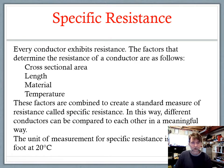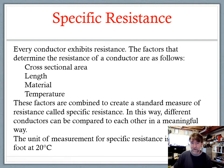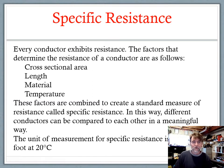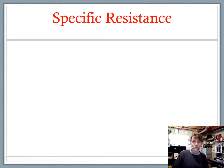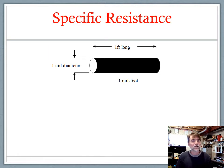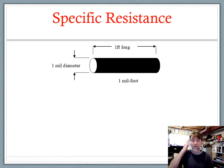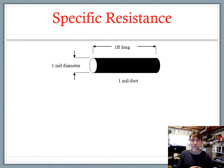The unit of measurement for specific resistance is ohms per mil foot at 20 degrees Celsius. Let's ignore the 20 degrees Celsius for now — we'll deal with temperature next. The unit is primarily ohms, because this is resistance, but ohms based on a particular condition: mil foot. That means the conductor is one mil in diameter, which incidentally means it is one circular mil, because one mil diameter squared is still one.